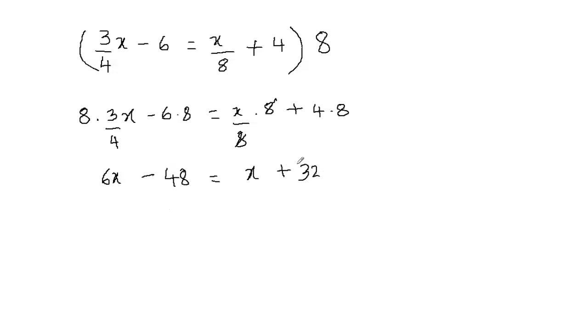Now you can see that I have variable on both sides of the equation. Whenever I have variable on both sides, I like to eliminate the variable term which is smaller. This is smaller than 6x, so I'm going to eliminate this. To eliminate x, I just have to subtract x on both sides.